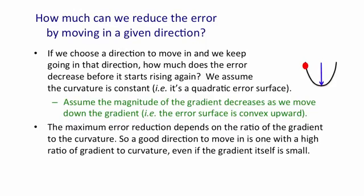So here's an example of a direction we could move in, where the vertical axis corresponds to the error, the horizontal axis corresponds to the weights in the direction we're moving in, and the blue arrow corresponds to the reduction we get if we start at that red point. Here's a surface that has a gentler gradient, but because it's got a better ratio of the gradient to the curvature, we get a bigger reduction in the error by the time we get to the minimum.